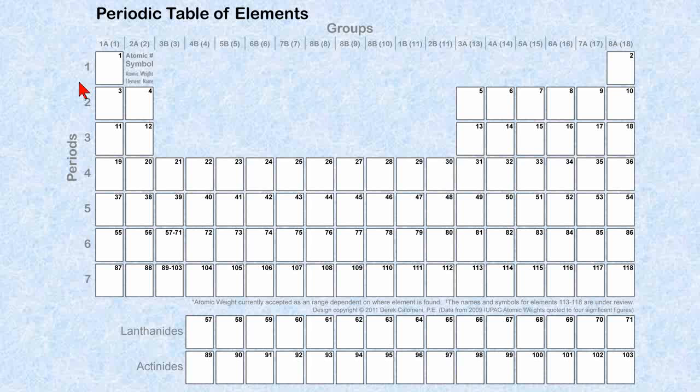On the left here are periods, 1, 2, 3, 4, 5, 6, 7. A period is a row.